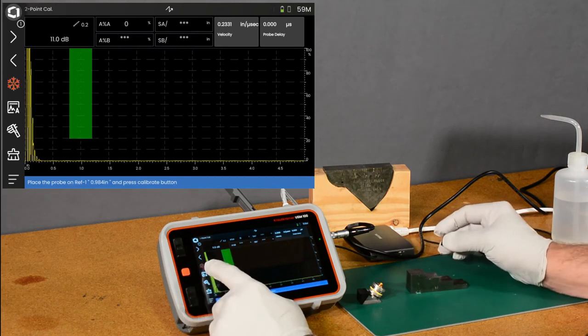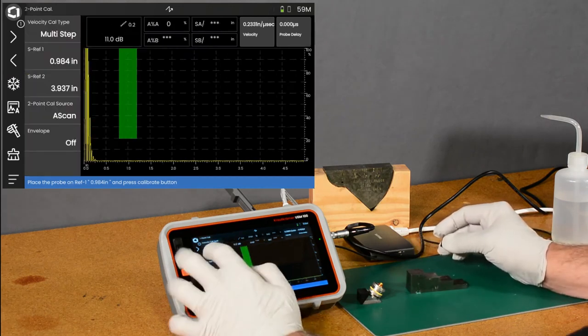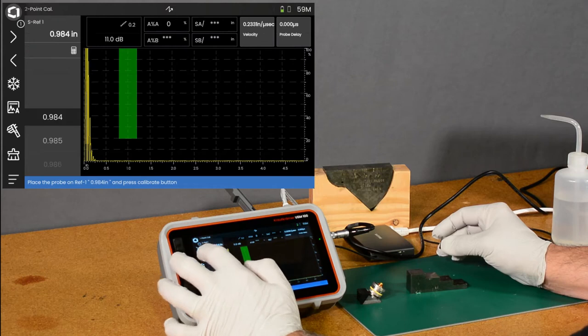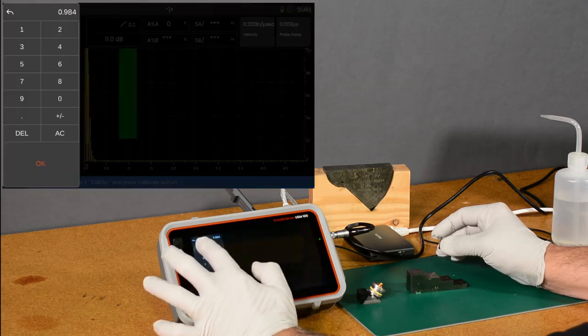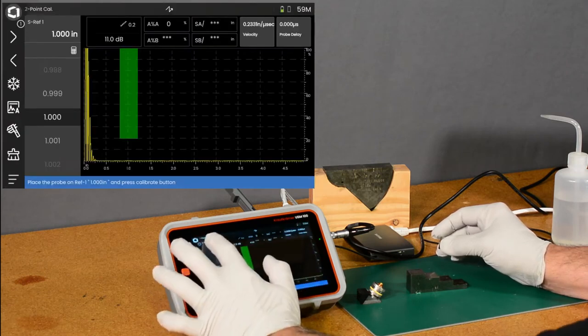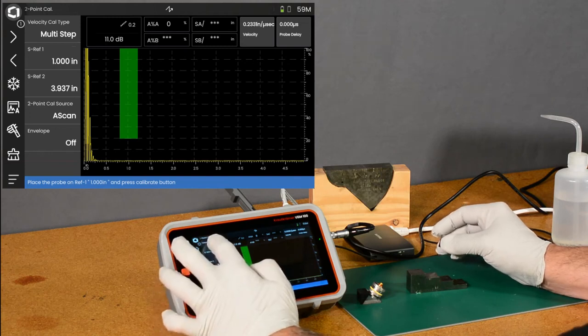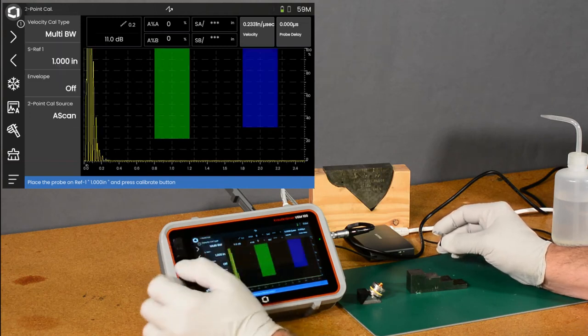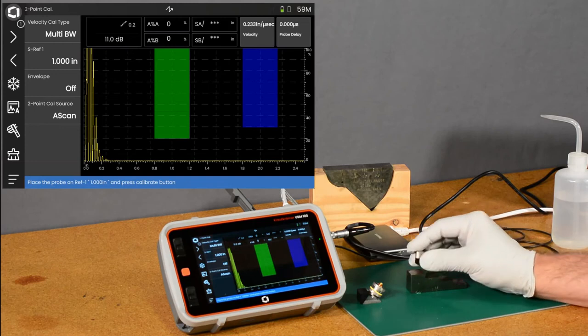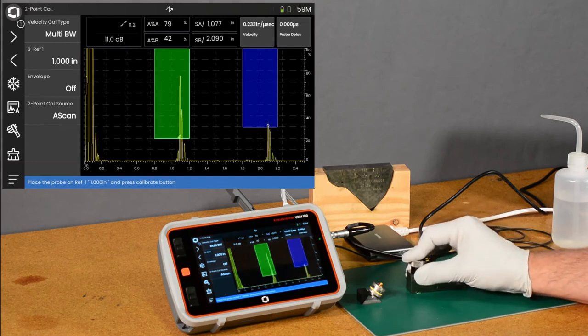I'll swipe out my sidebar. I'm going to calibrate on the 1 inch thickness, so we'll change that to an inch. And I'm going to make use of our multi-backwall calibration. So this allows us to do the calibration in one quick step.